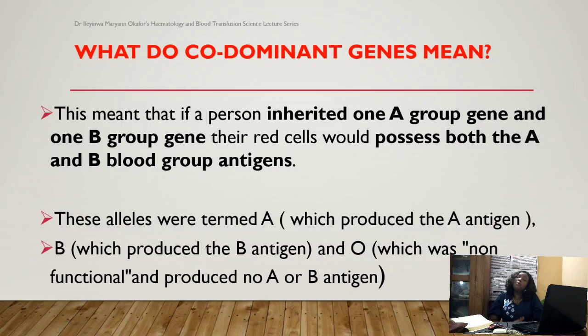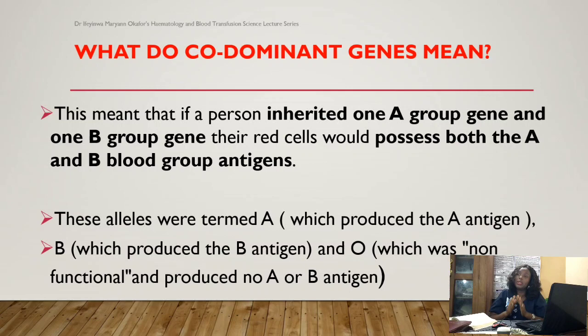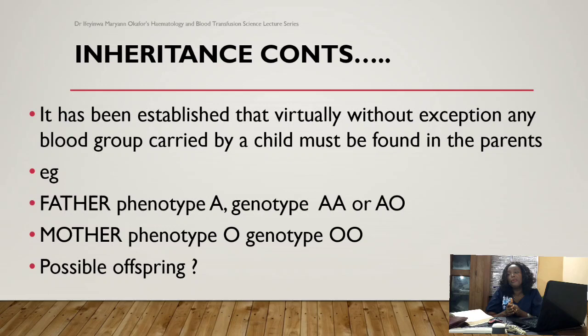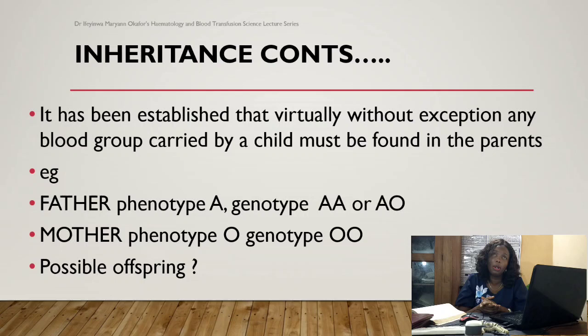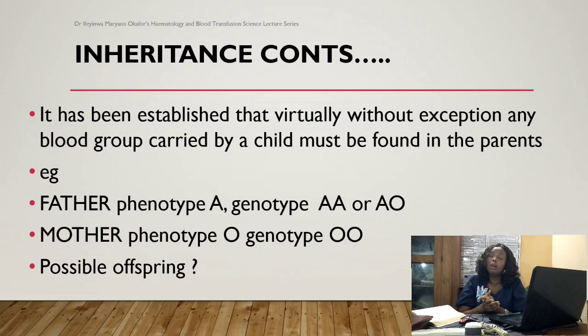It has been established without exception that any blood group carried by a child must be found in the parents. For example, if a father's phenotype is A with genotype AA or AO, and the mother's phenotype is O, the possible genotypes of the offspring are AA, AO, or OO. If you calculate this in a Mendelian manner you should be able to arrive at that result.